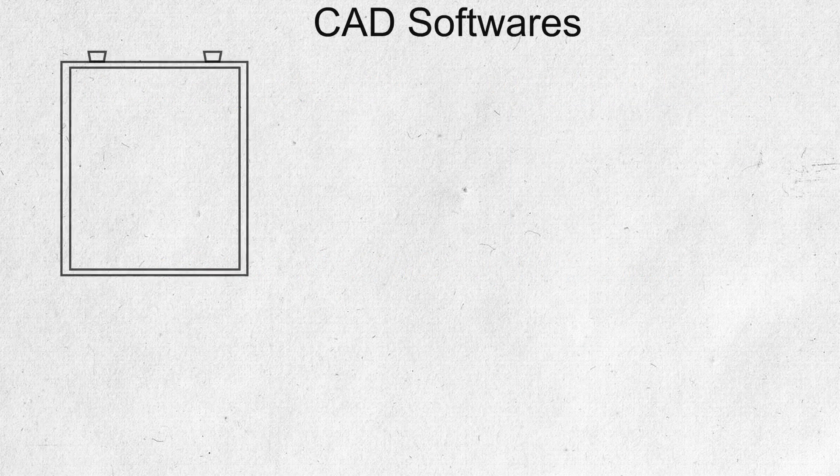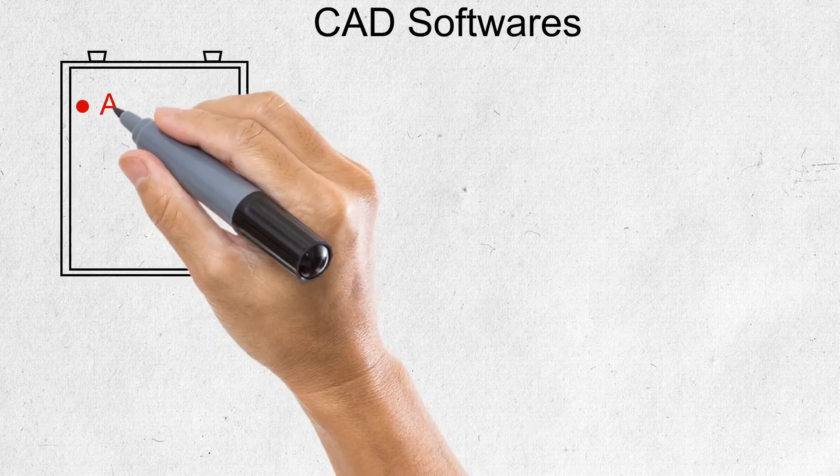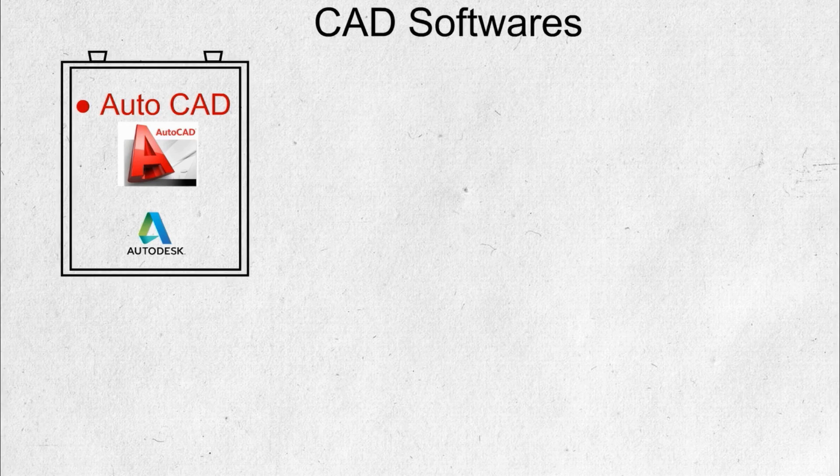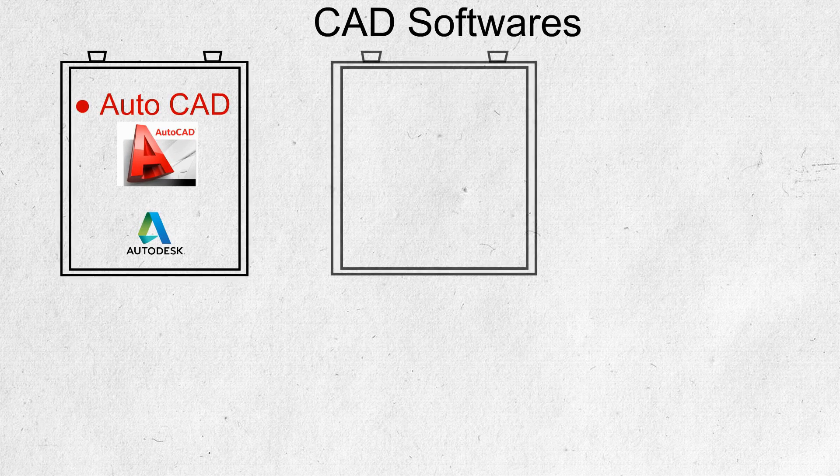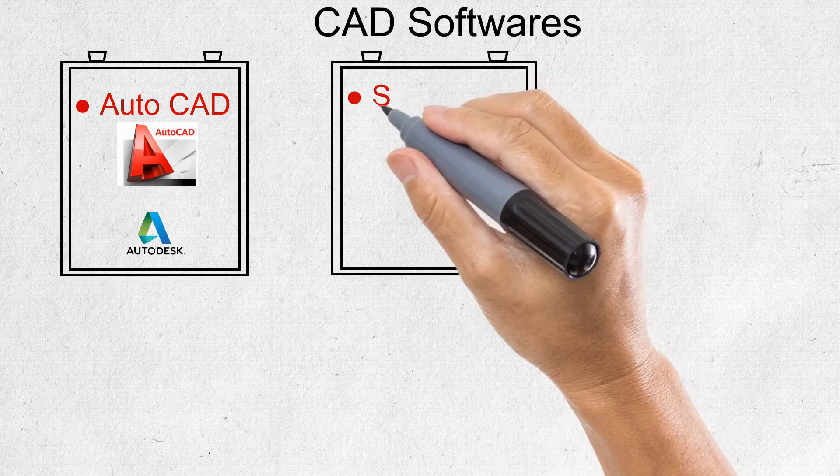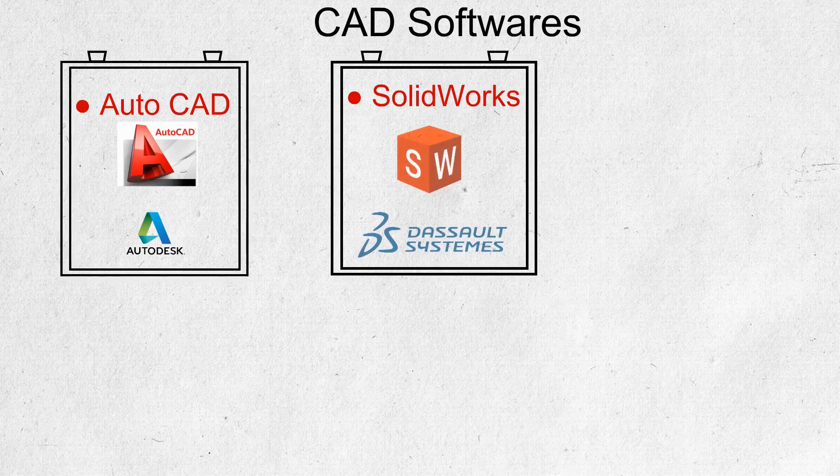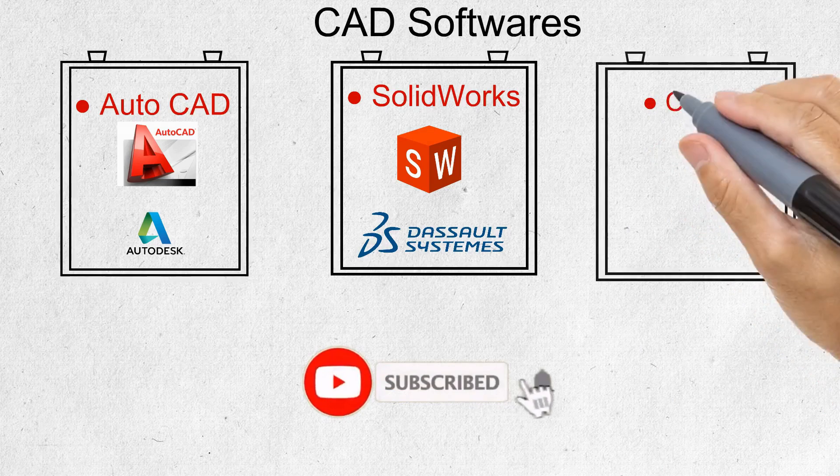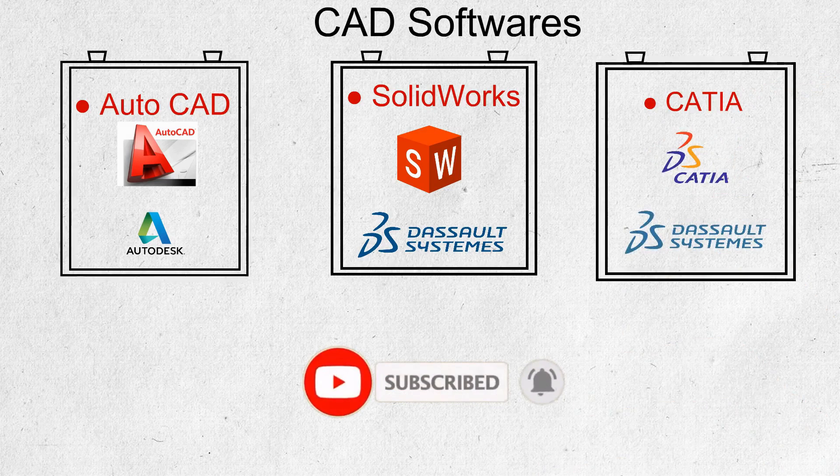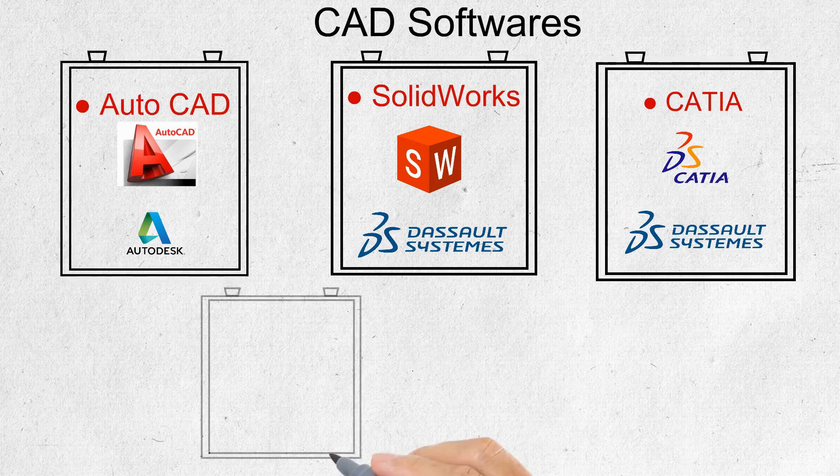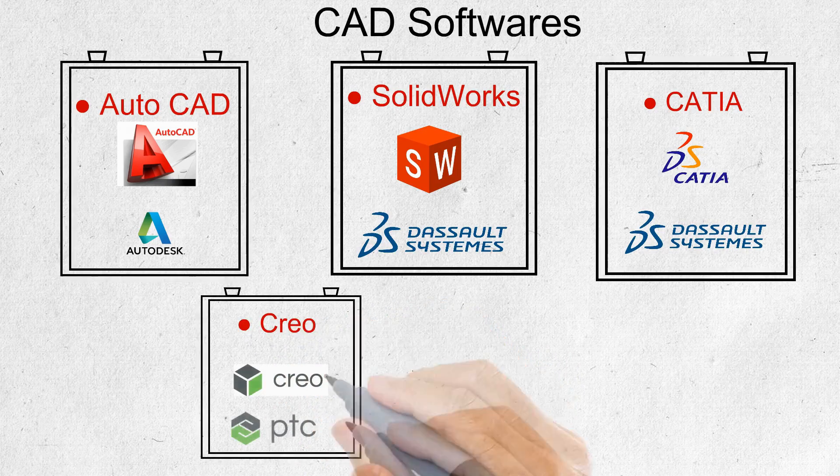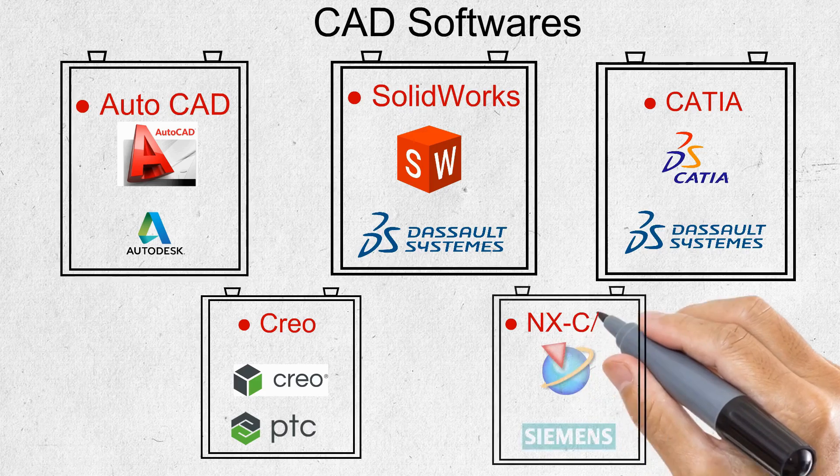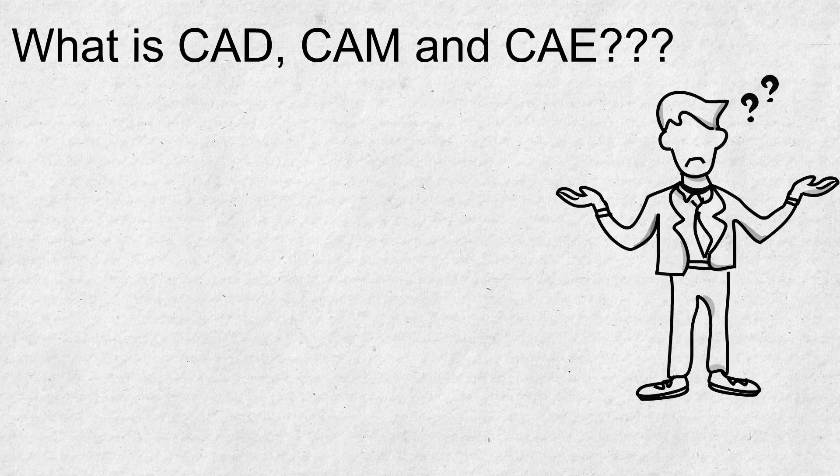What are the major CAD software available in the market? The basic software for both 2D and 3D in CAD is AutoCAD, developed by Autodesk. Next is SolidWorks, developed by Dassault Systèmes, which is user-friendly and easy to learn. Next is CATIA, developed by Dassault Systèmes, mainly used for surface modeling. Another is Creo, developed by PTC, the replacement of Pro/E software. Finally, NX CAD is developed by Siemens.